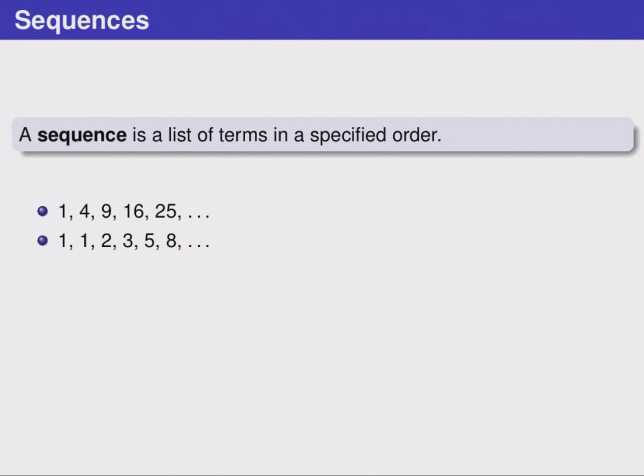Here's another sequence. This one's called the Fibonacci sequence. Each number here is the sum of the two before it. A sequence can represent all sorts of information. This one could represent how much money is in a bank account on the first day of every month.